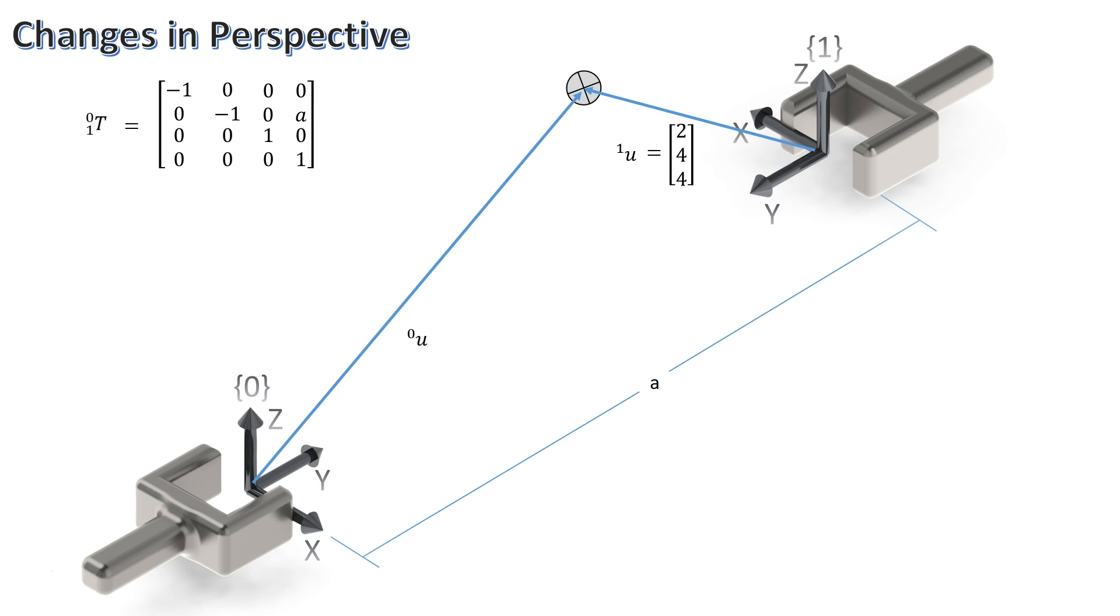In this case, the coordinates of the object with respect to frame 1 is 2 units in the x, 4 units in the y, and 4 units in the z. All we must do to get the coordinates with respect to frame 0 is multiply the known coordinates by the transformation matrix.